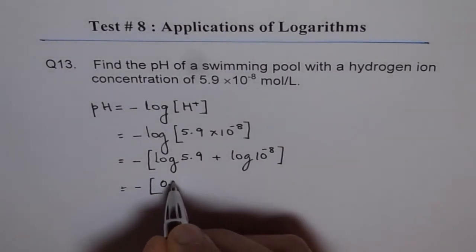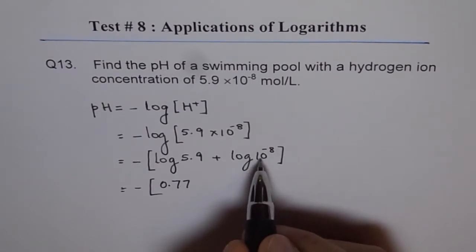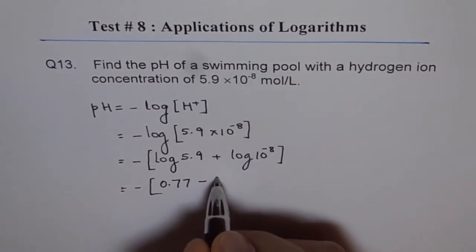So this is 0.77 and log to the base 10 of 10 to the power of minus 8 is minus 8.